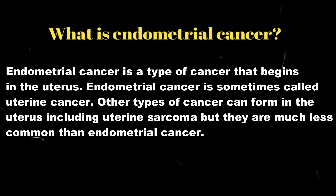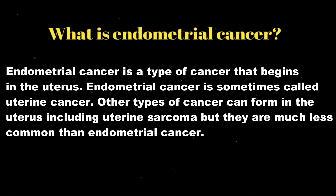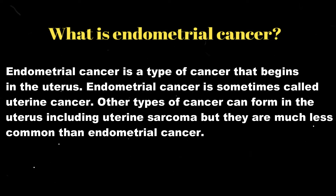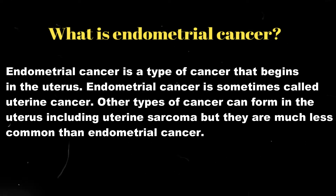First of all, what is endometrial cancer? It is a type of cancer that begins in the uterus. Endometrial cancer is also called uterine cancer. What are the other types of cancer that can be formed in the uterus? These are uterine sarcoma, but they are very less common than endometrial cancer.